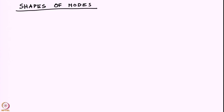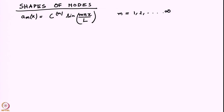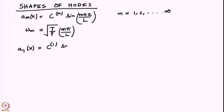It is interesting to visualize the shapes of oscillation in space, just as we had done for the discrete degrees of freedom case. Let us look at the shapes of modes. We have seen that our eigenmode a_m of x is c_m times sin(m pi x / L) with the corresponding frequency omega_m.